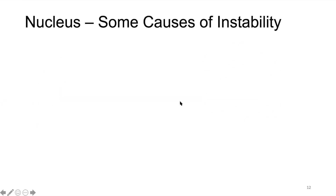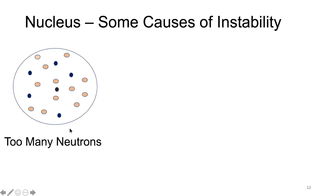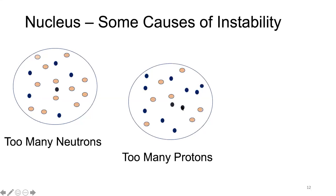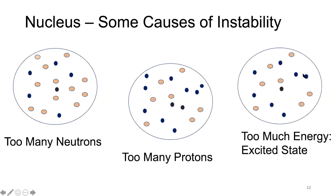Let's look at some of the reasons why a nucleus will be unstable. One reason is that it has too many neutrons — there is an ideal ratio of protons to neutrons that causes stability. If a nucleus has way too many neutrons, it is unstable. Similarly, if it has way too many protons, it is also unstable. Another cause of instability is that the nucleus could have way too much energy — it could be in an excited state and want to get rid of some of that energy.